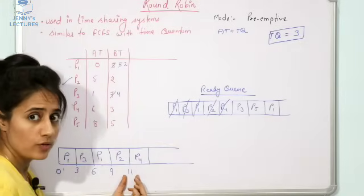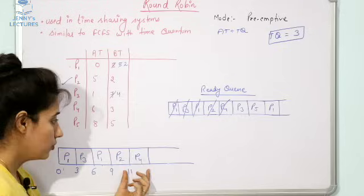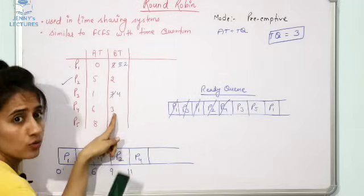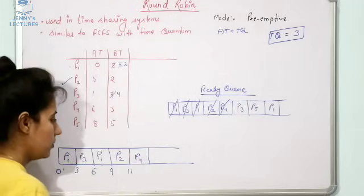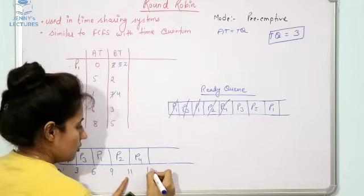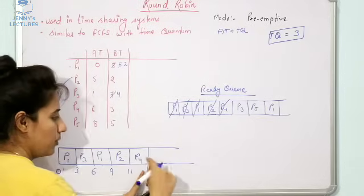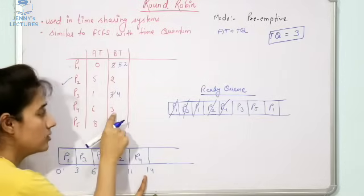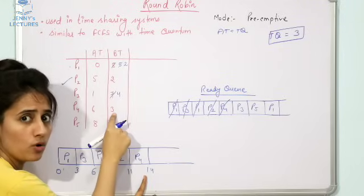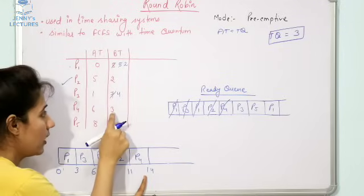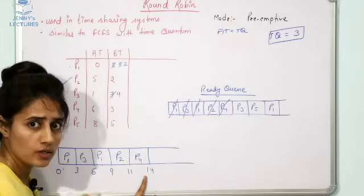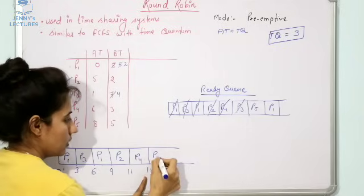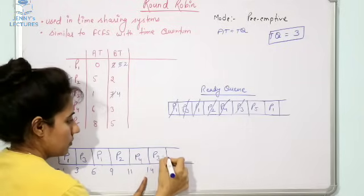Next, P4 runs. Its burst time is three units — exactly equal to the time quantum — so we allocate CPU to P4 for three units of time, from time eleven to fourteen. P4 completes its execution and does not go back to the ready queue.